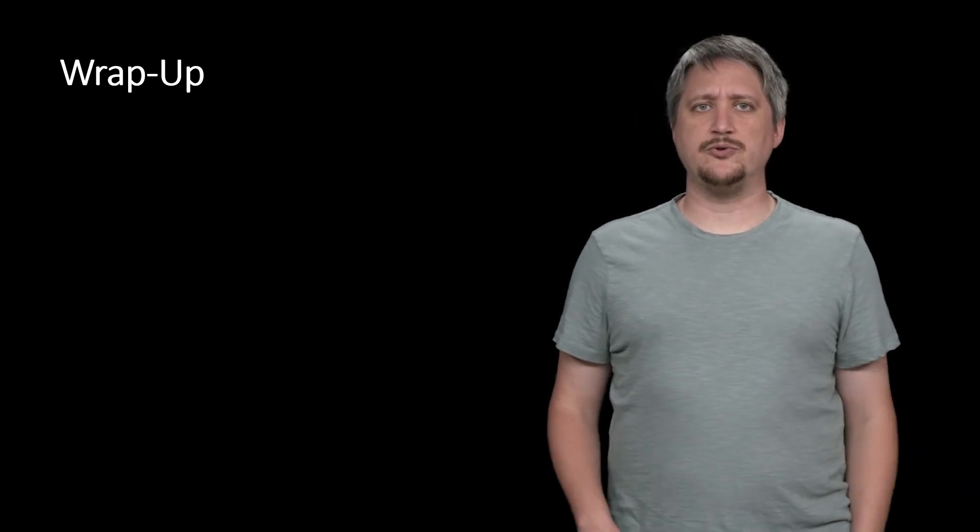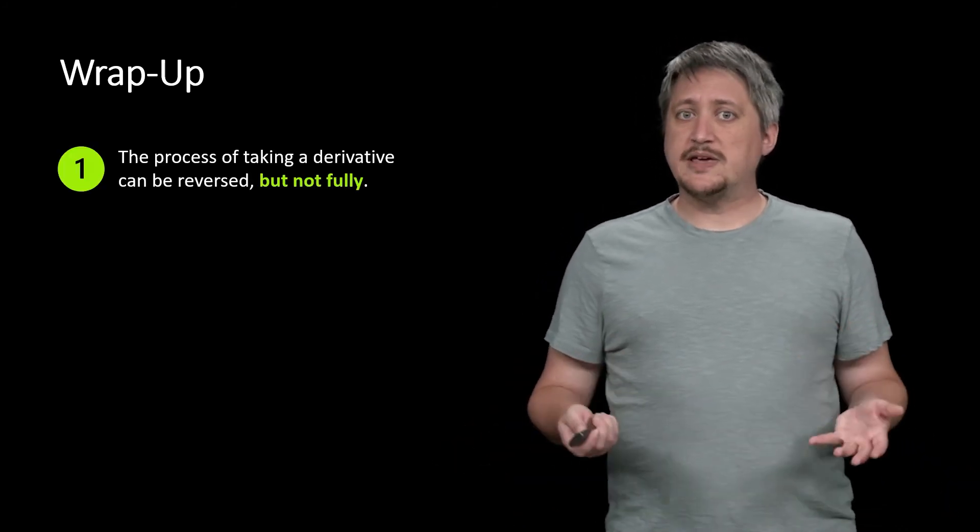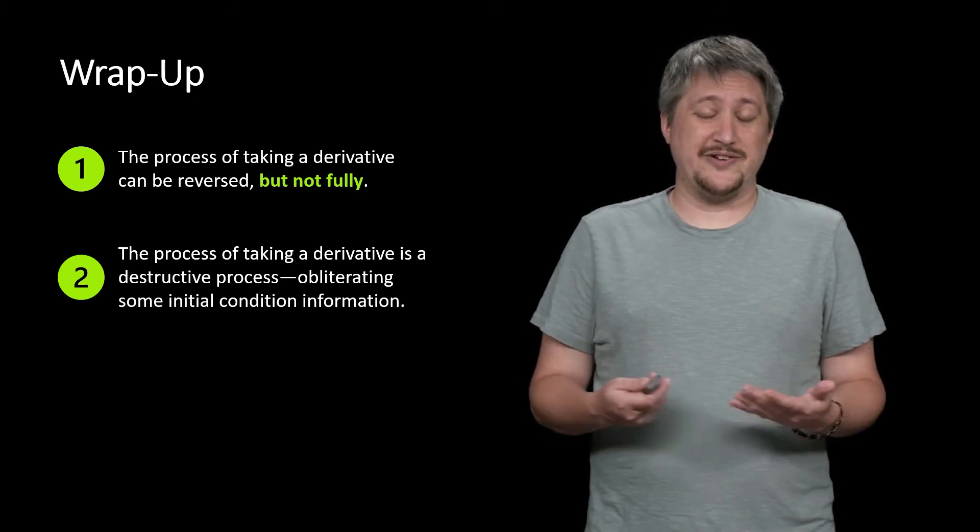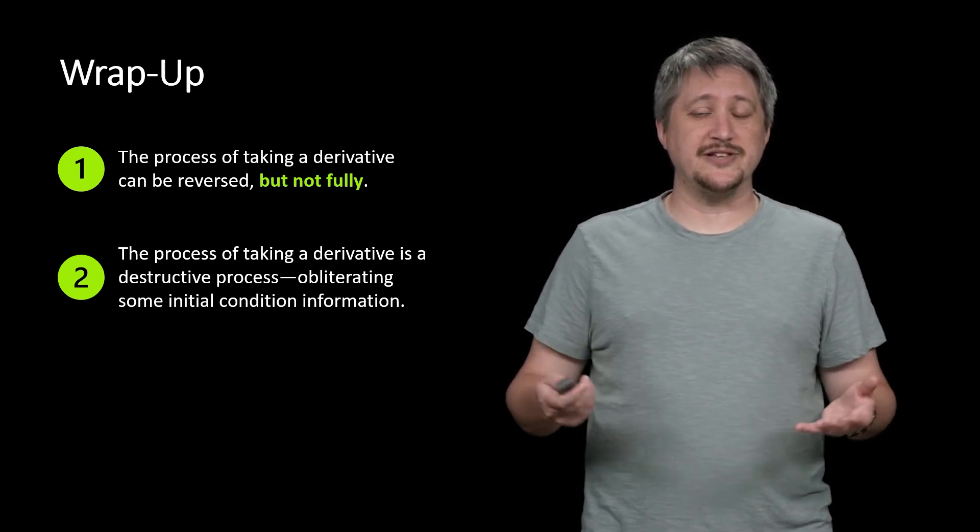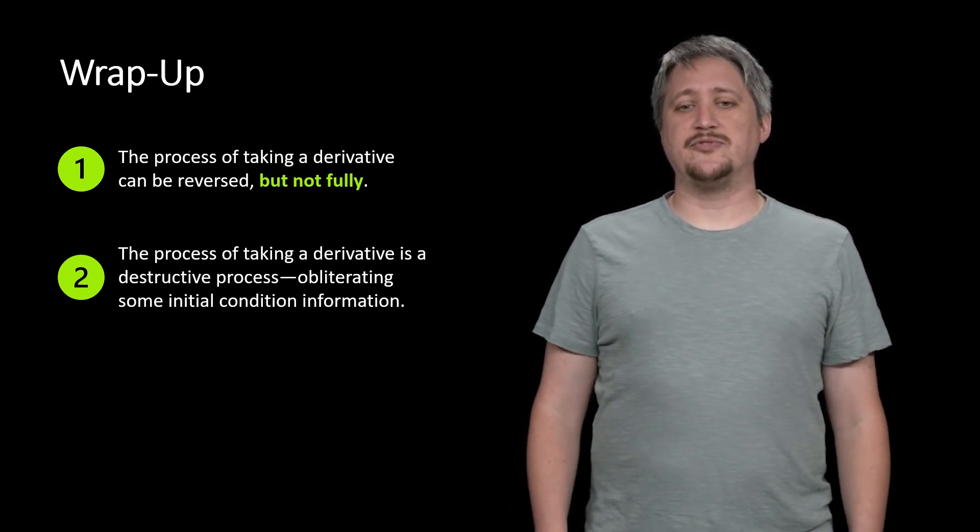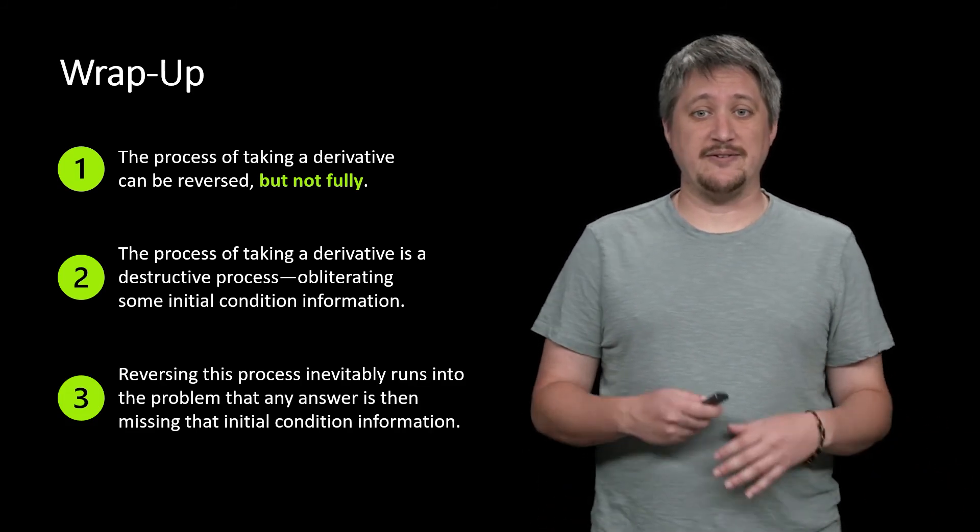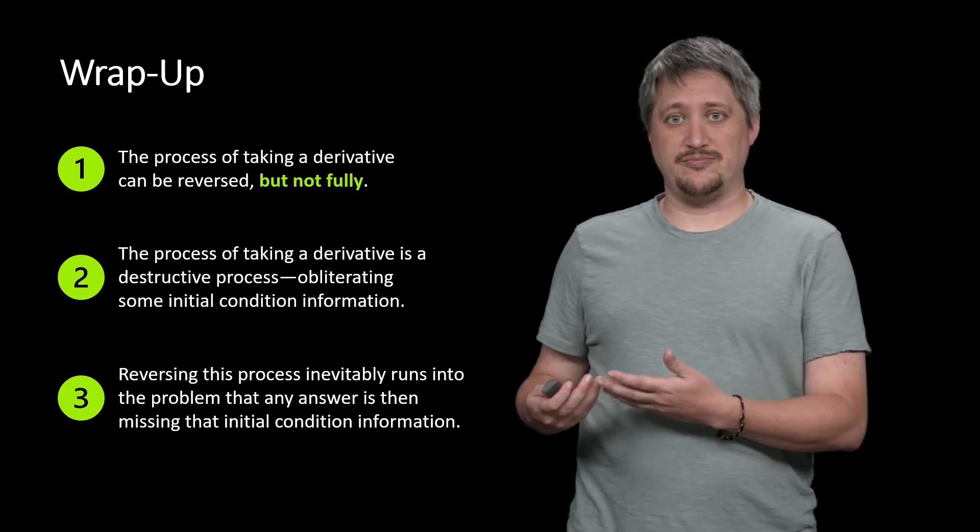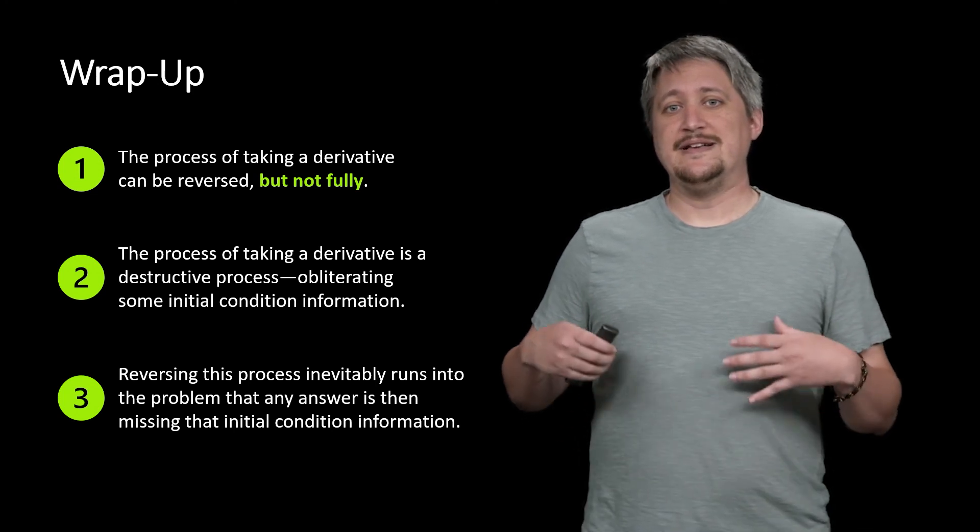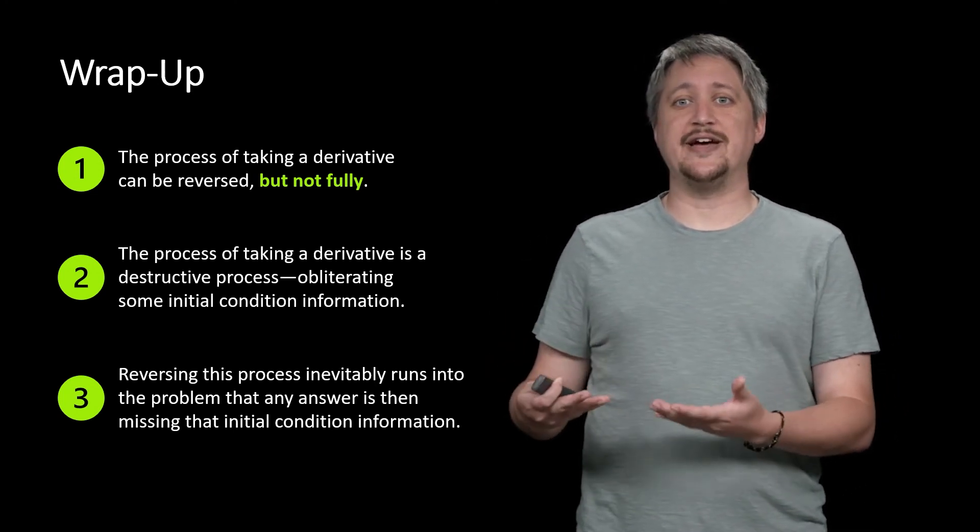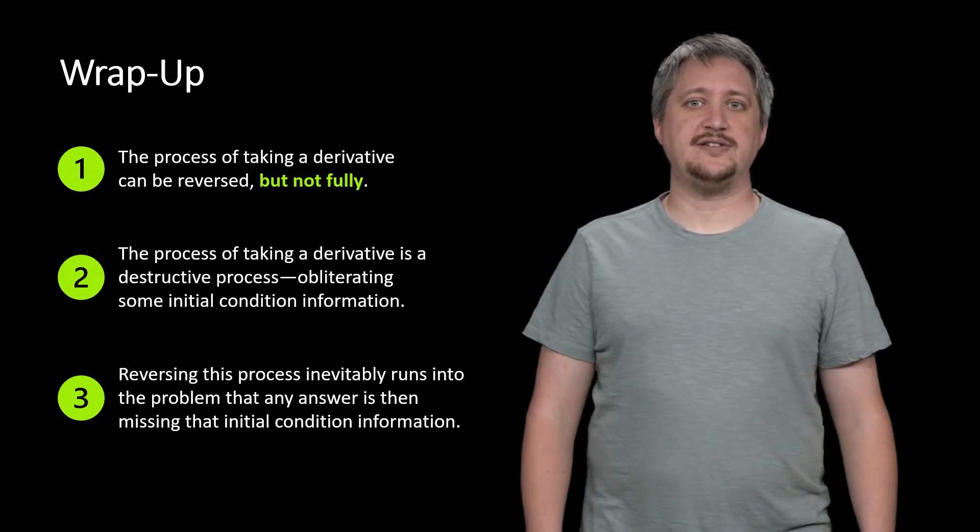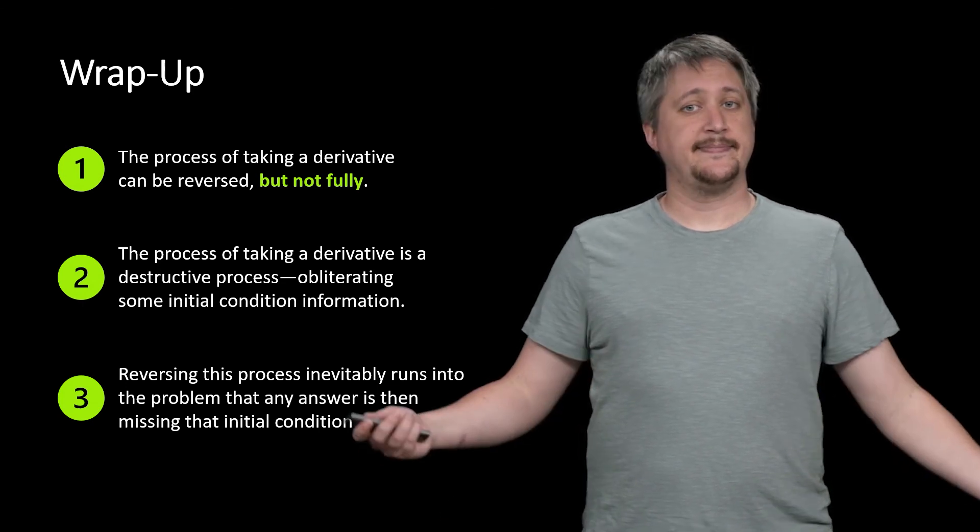So what do we do? The process of taking a derivative can be reversed, but not fully. And the reason for this is that taking a derivative is inherently a destructive process. It obliterates some of the initial condition information. It's just lost forever once we have done that. So as a result, trying to reverse this process inevitably runs into the problem that any answer we come up with is missing some of that initial condition information. So there's some way we have to tackle that or acknowledge that if we're going to try to come up with a systematic way of reversing this. That's something we're going to see in the future.